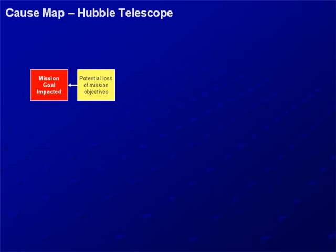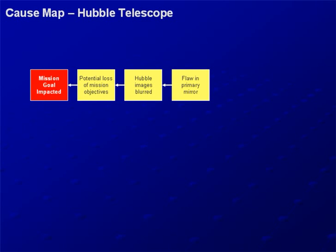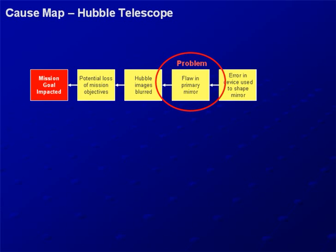Understanding the impact of the goals provides us the beginning of the analysis step. The mission goal is impacted because there's potential loss of the overall mission objectives because the Hubble images are blurred, and the Hubble images are blurred because of the flaw in the primary mirror. This is what a lot of people focus on as the problem — they found the component that is bad, the failure, and that's the cause. But you can ask more why questions. The flaw is because of the error in the device used to shape the mirror, and the error in the device is because it was assembled incorrectly. Even between these cause-and-effect relationships, you can add more detail.